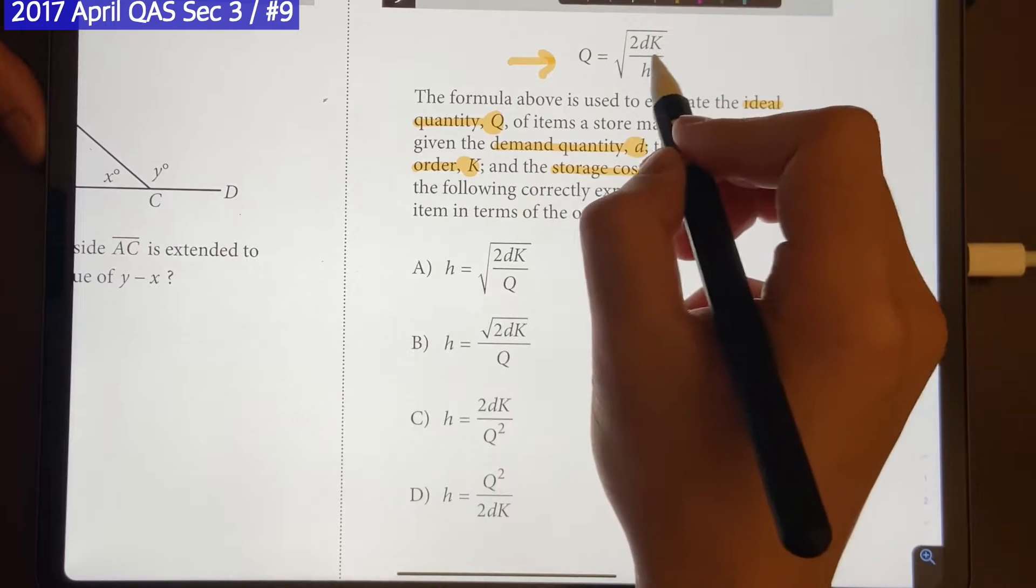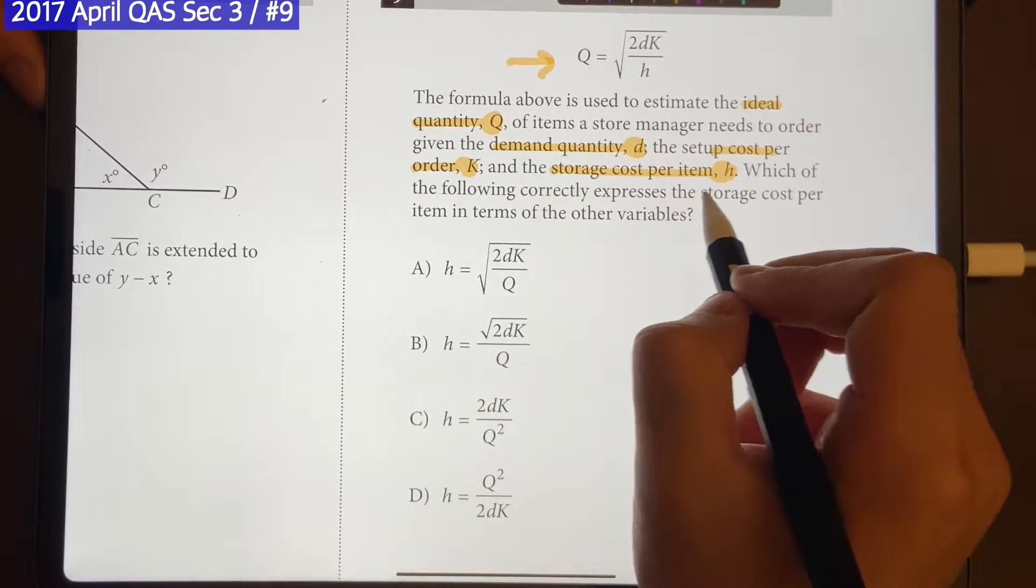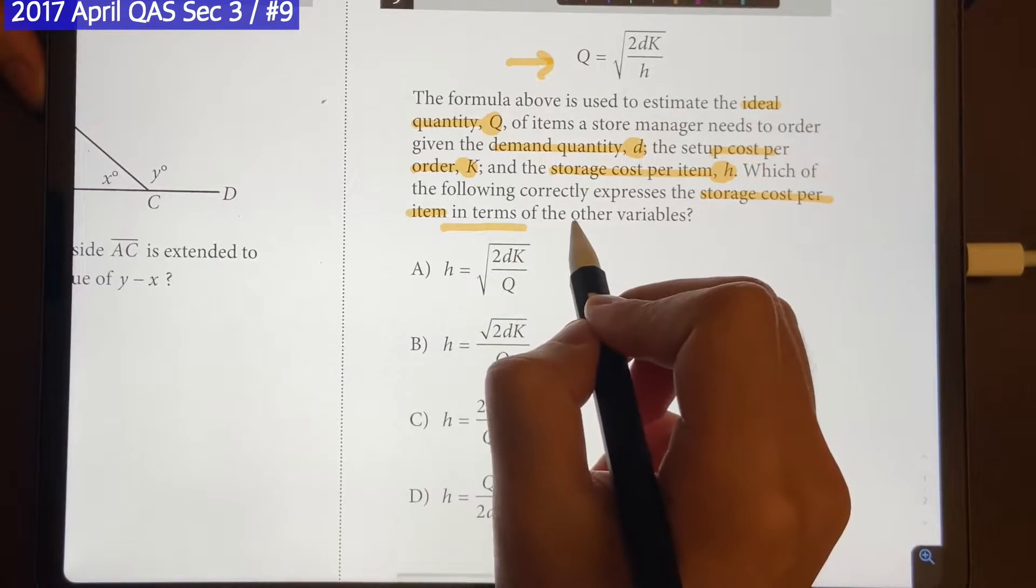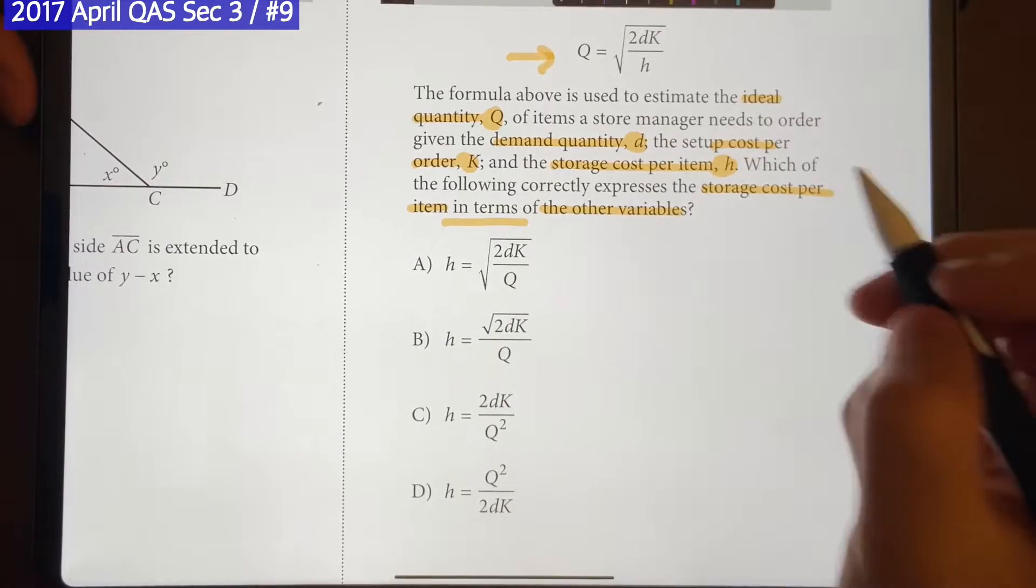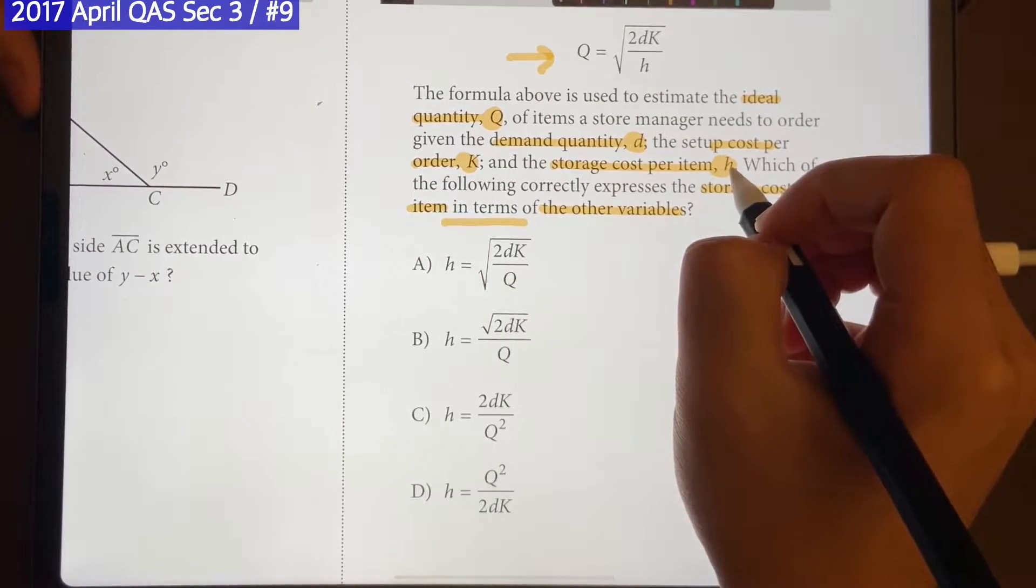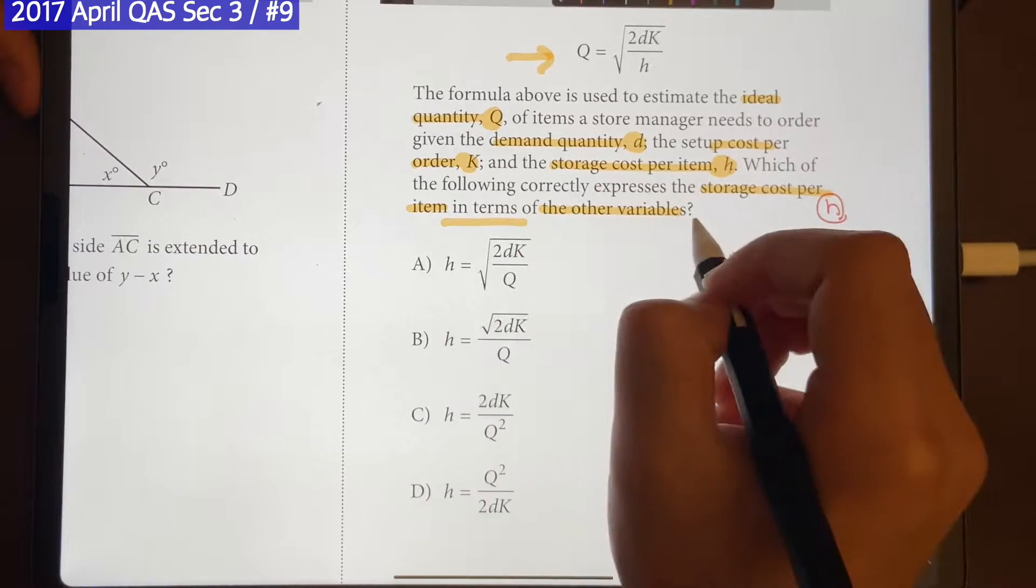These variables make up this equation right here. Which of the following correctly expresses the storage cost per item in terms of the other variables? From the question, we know that storage cost per item is represented by the letter H, so we want to express H in terms of the other variables, right?